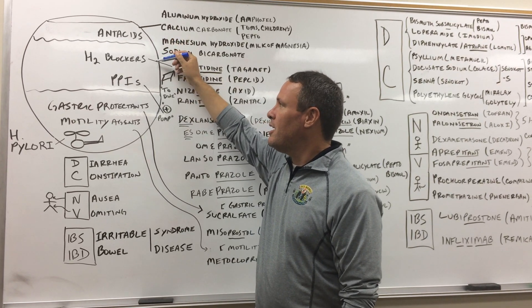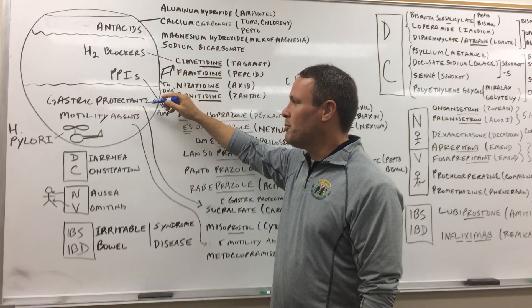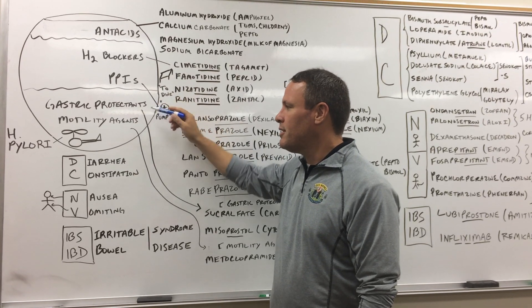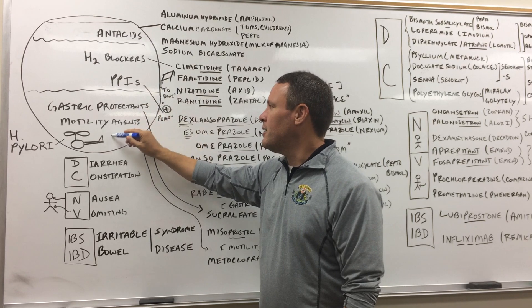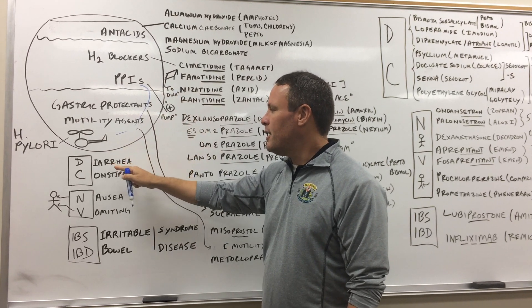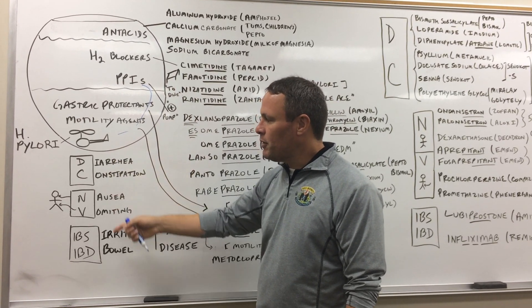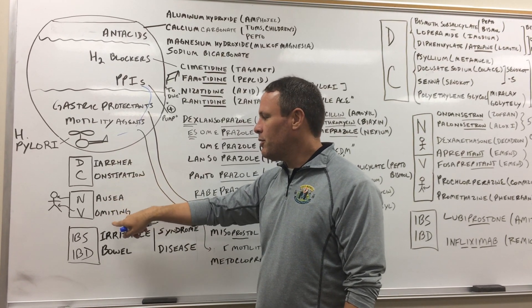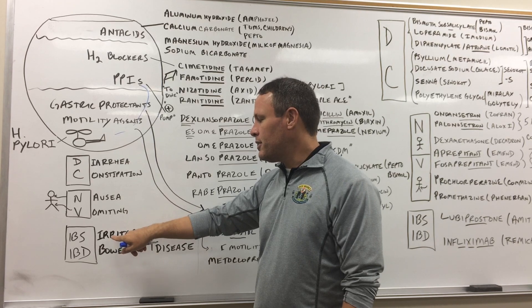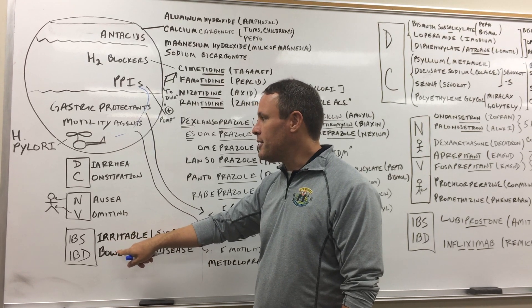Antacids, H2 blockers, PPIs, gastric protectants, motility agents, a little bit about H. pylori, which goes with the PPIs here, and then we paired a couple of different pathophysiologic classes: diarrhea with constipation, nausea with vomiting, irritable bowel syndrome, and irritable bowel disease.